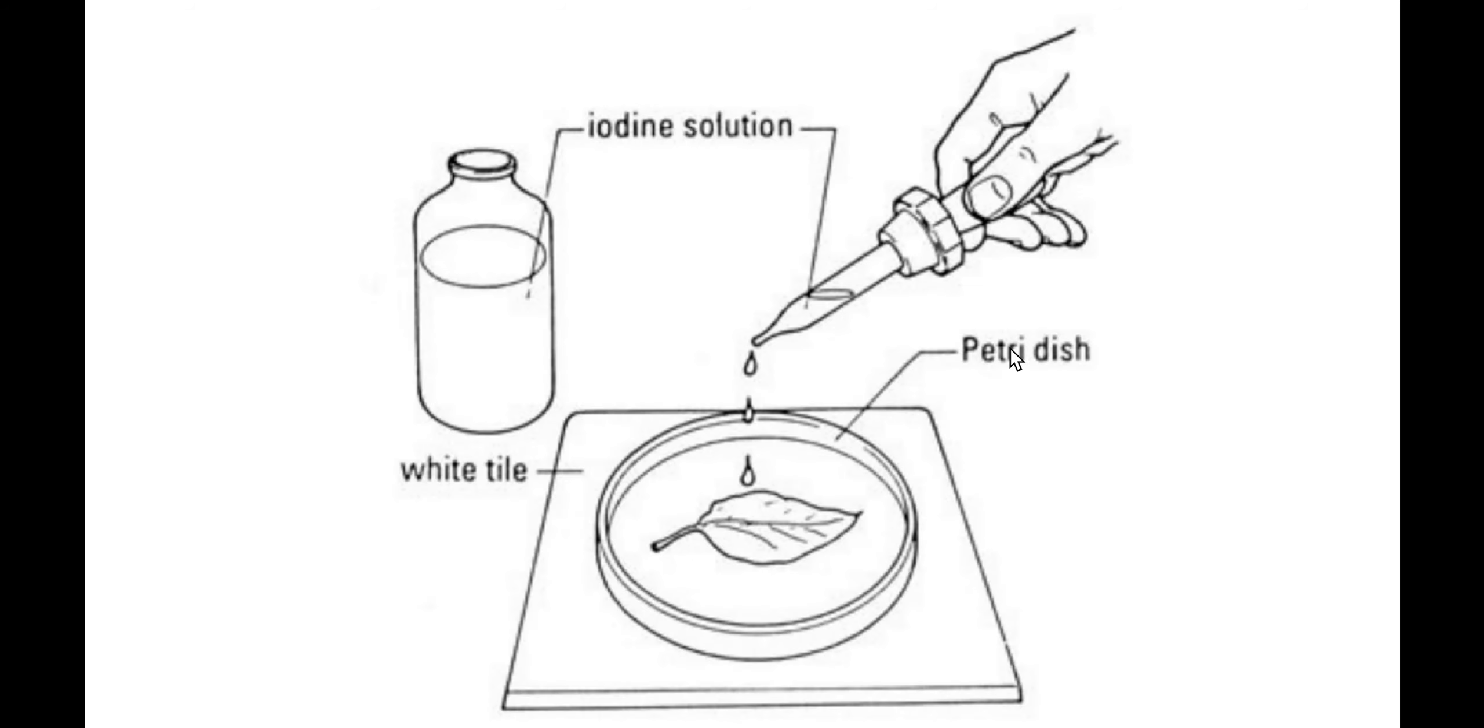Then we will lay the leaf out on a white tile or petri dish and add our iodine solution. What we should see is the uncovered leaf—the iodine solution should change from the browny color to the blue black color. Our covered leaf should not have any real change because photosynthesis hasn't taken place and the starch has been used to maintain the plant.